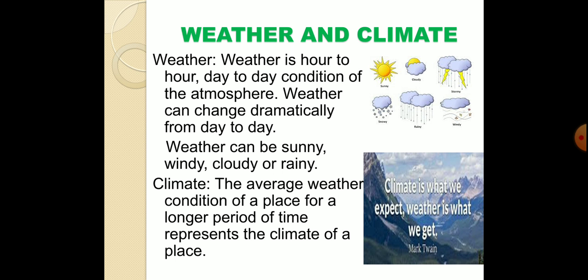Let's learn what is weather and what is climate. Weather is the hour-to-hour, day-to-day condition of the atmosphere. Weather can change dramatically from day to day — it can be sunny, windy, cloudy, or rainy. For example, it might be cloudy now and sunny the next day, or it may rain today and be sunny tomorrow.